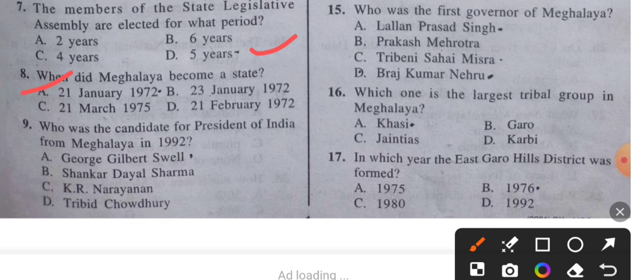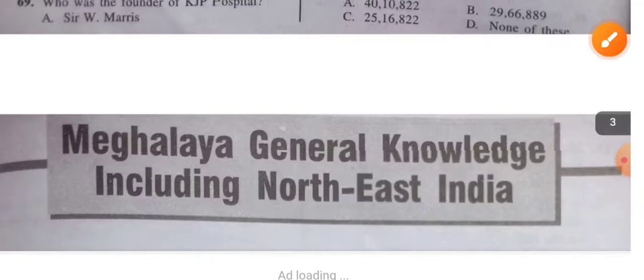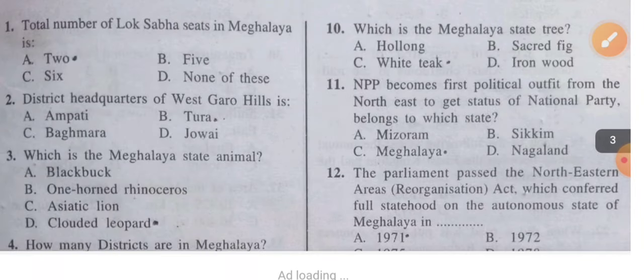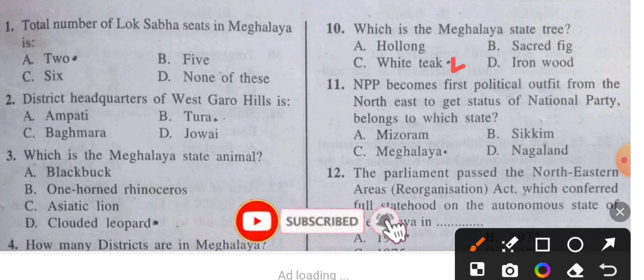Question 9: Who was the candidate for President of India from Meghalaya in 1992? That is very important. The answer is George Gilbert Well. Question 10: Which is the Meghalaya state tree? The answer is the White Teak.